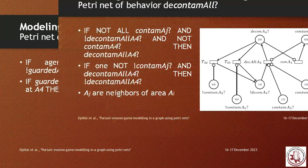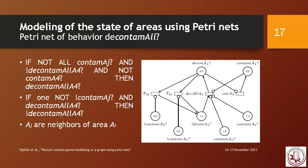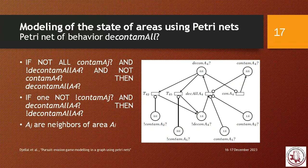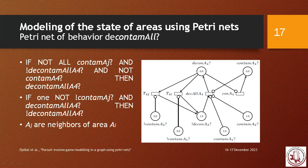The fourth sub-Petri net is the DecontamAll net, which is more complex. An area is in the DecontamAll state — meaning a token is in 'decontam all A4' — if and only if all other areas connected to this area are decontaminated. Conversely, if even one connected area is contaminated, this area will not achieve DecontamAll status, meaning it remains at risk of contamination.